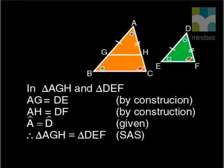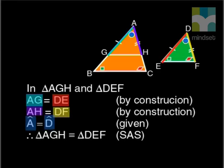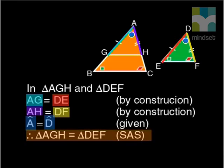In triangle AGH and triangle DEF, AG equals DE because we constructed it like that. The same goes for AH equal to DF. The angles A and D are equal. They were given as equal. That gives us three equal parts in the two triangles. Two sides and the angle between the sides. So we can write that triangle AGH is congruent to triangle DEF, side-angle-side. Look at the diagrams again.